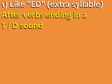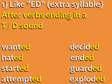ED is pronounced like ED with an extra syllable after verbs ending in a T or a D sound. For example: wanted, hated, started, attempted, decided, ended, guarded, exploded.